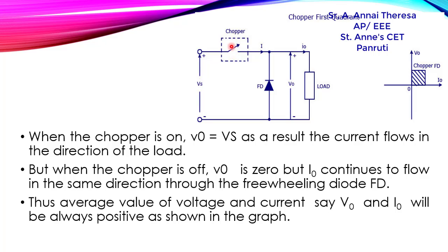When the switch is on, that is when the switch is closed, the current will flow through the load. We get the output voltage V0 equal to Vs and the output current I0. When the switch is off or open, there is no current flow.